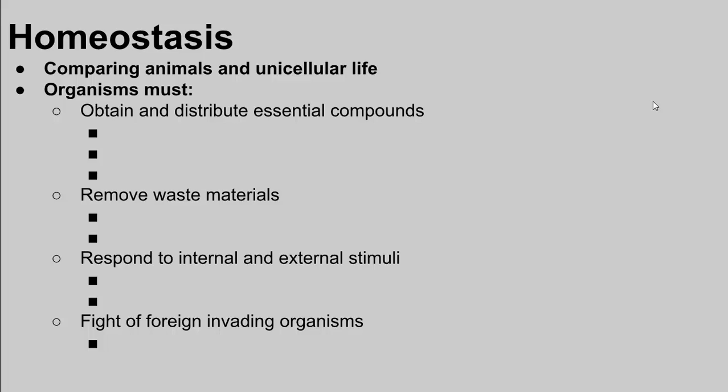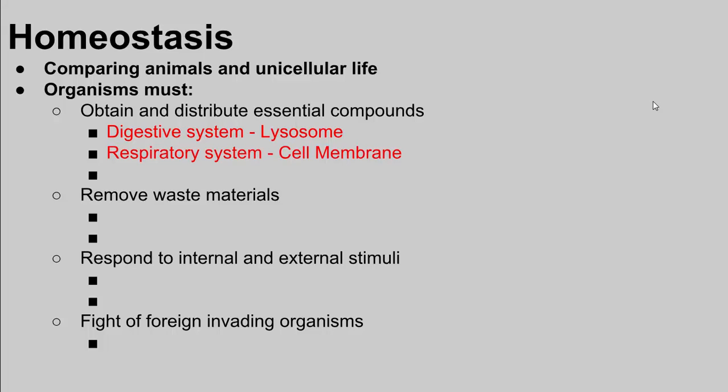All organisms need to obtain nutrients and circulate important compounds around the organism. In animals, a digestive system takes in the nutrients we need; in a single-cell organism, it's a lysosome that digests and breaks down large molecules. The respiratory system takes in oxygen; in a single-cell organism, the cell membrane allows oxygen to diffuse in. In multicellular animals, a circulatory system distributes materials around the organism; in a single-cell organism, that moves through the cytoplasm or the ER. These systems and organelles are analogous — they fulfill the same function even though they're quite different.